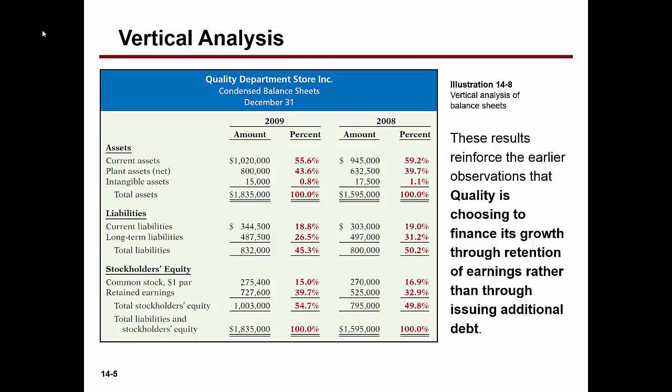Do you get 55.6%? That tells you current assets make up 55.6% of total assets. That's the vertical analysis.